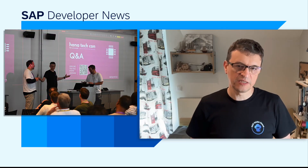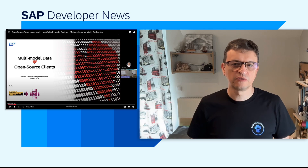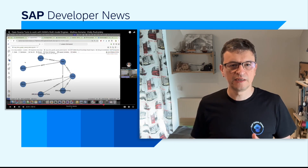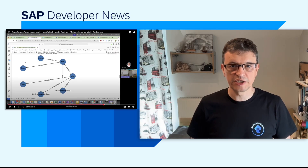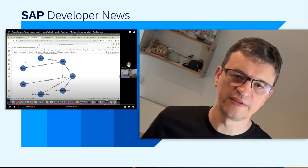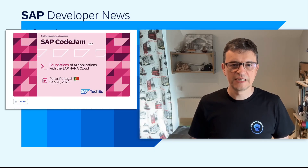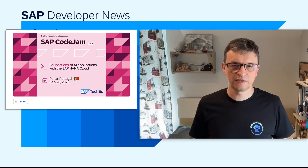If you're curious why my co-presenter Matthias received a bottle of Polish wine from me, don't miss our session 'Open Source Tools to Work with SAP HANA Multimodal Engines.' Toward the end, I demoed LangChain integration with SAP HANA Cloud Knowledge Graph Engine using Python. Want to try this hands-on? The first SAP CodeJam on this topic, 'Foundations of AI Applications with SAP HANA Cloud,' is happening in Porto this September and then in Kuwait in October. Interested in hosting such an event? Let me know.